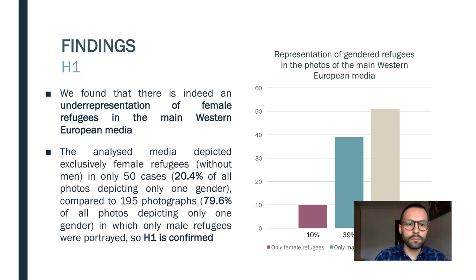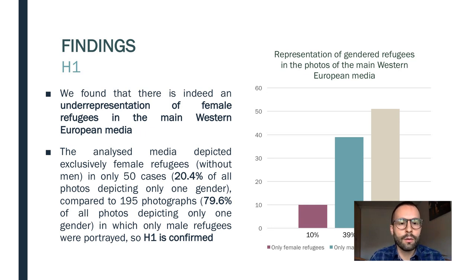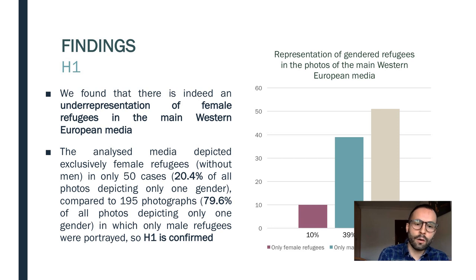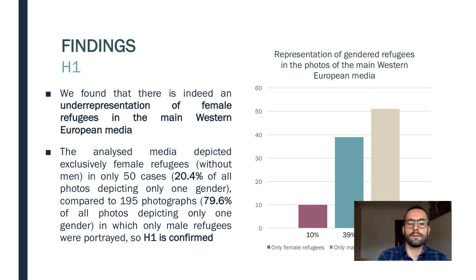Regarding the findings for hypothesis 1, we found that there is indeed an underrepresentation of female refugees in the analyzed media. Female refugees were depicted in only 20.4% of all photographs depicting only one gender, while male refugees were depicted in 79.6% of photographs depicting just one gender. Hypothesis 1 is confirmed.